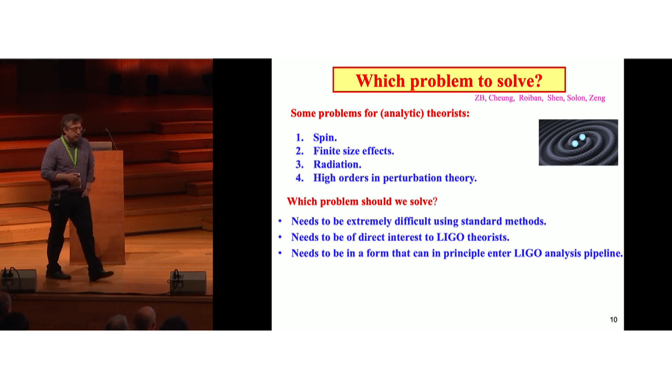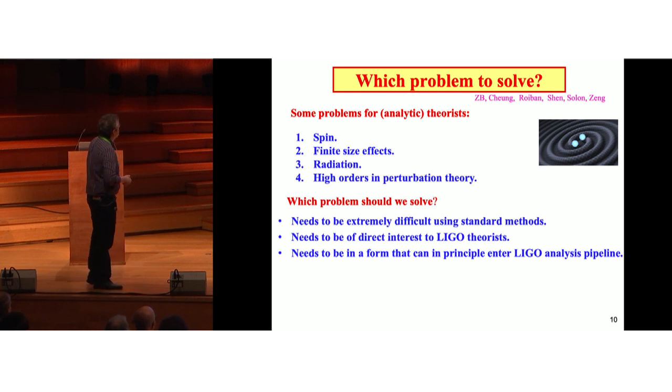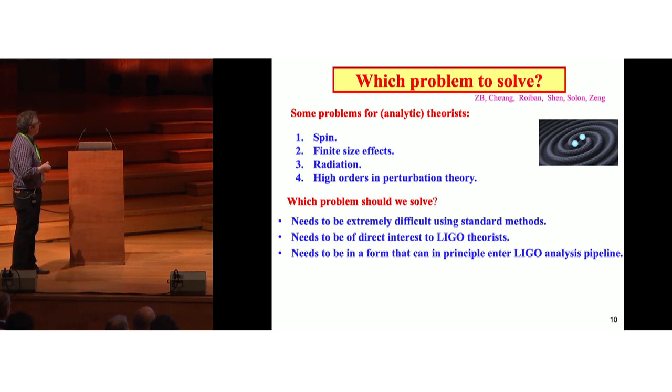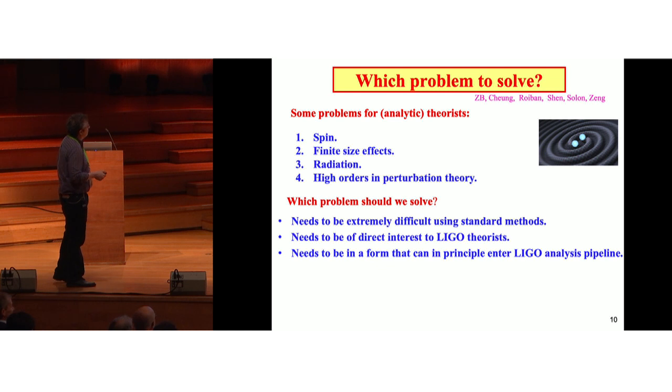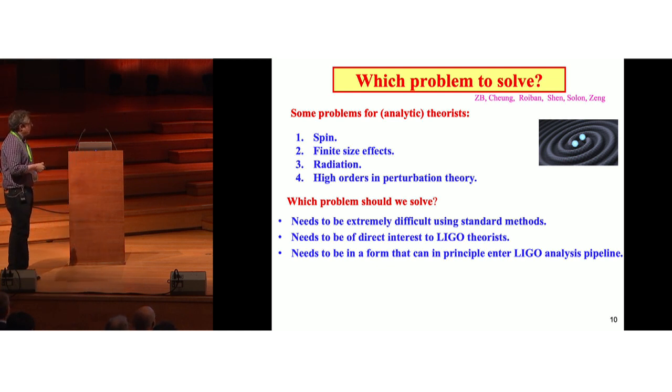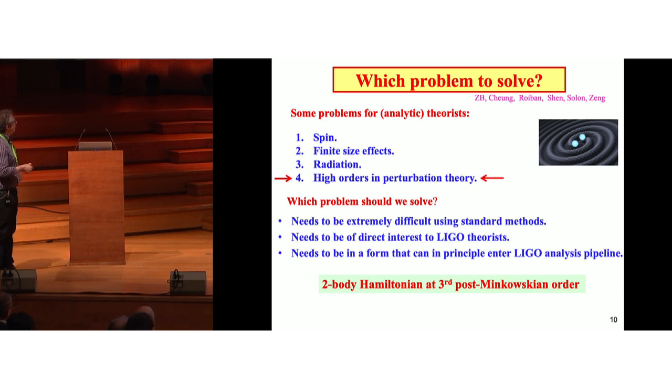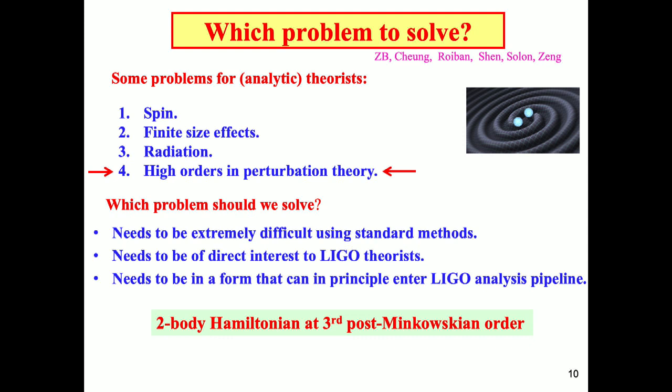So when we started thinking about this problem, we were asking ourselves the question, what problem should we solve? There are many problems that people have been looking at. There's spin, finite size effects, radiation, or trying to do higher orders in perturbation theory. Well, to us, there were some boundary conditions of what we needed to do. First, we wanted to have an impact. It needed to be something that was extremely difficult using standard methods. It needed to be of interest to LIGO theorists. And whatever we would do, it had to be in a form that, in principle, it could enter the LIGO analysis pipeline. Otherwise, we'd probably pick a different problem. So anyway, this is the winner: high orders in perturbation theory. That's what we're very good at. The problem we're going to look at is two-body Hamiltonian at third post-Minkowski order.